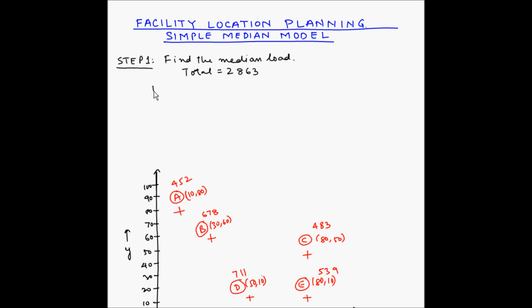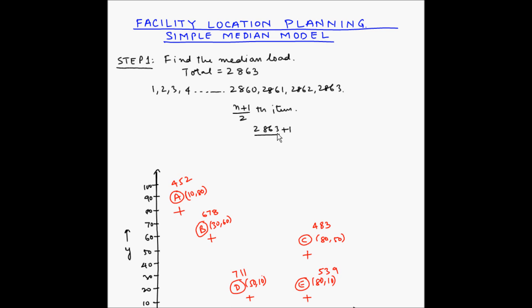Since 2863 is an odd number, the median is the (n+1)/2 th item: (2863+1)/2 = 2864/2 = 1432. Since the identification numbers are in sequence with a gap of 1, the number 1432 is also the median value in this series.